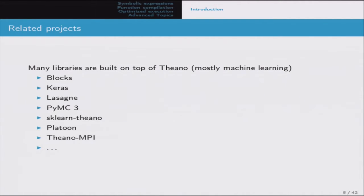Theano has also been the base of other software projects. For instance, Blocks, Keras, and Lasagne are deep learning libraries that use Theano as a backend and provide a higher-level interface with concepts of layers and training algorithms. SK-learn Theano has a converter to load Caffe models from the Caffe Zoo. PyMC3 uses Theano not for machine learning but for probabilistic programming. Platoon and Theano-MPI are libraries to help train on multiple machines and multiple GPUs with model and data parallelism.